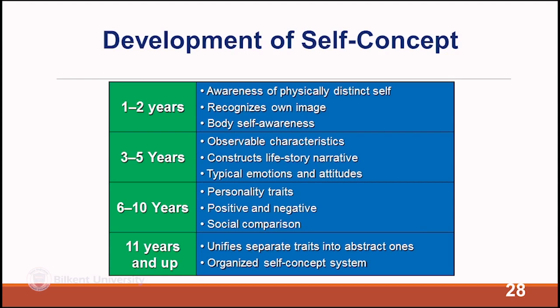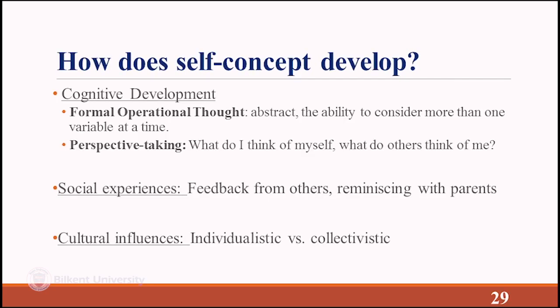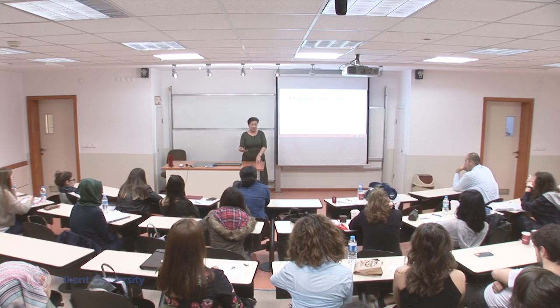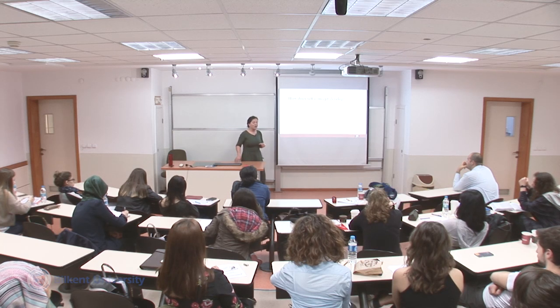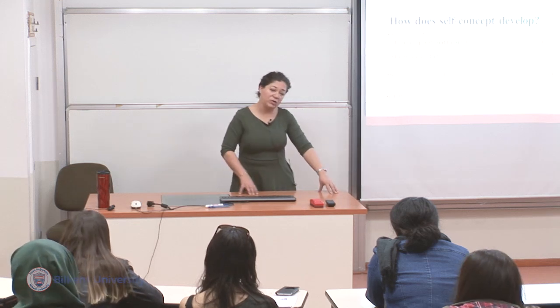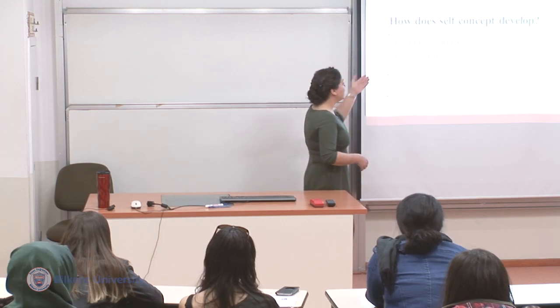This recap table of self-concept development is a useful study tool for developmental trajectories. How does self-concept develop? Cognitive development, social experiences, and cultural influences all play a role. Cognitively, children start with concrete ways of thinking about concepts and move toward abstract thinking — the same applies to self: it starts with physical appearance and belongings and moves toward more abstract self-identification.